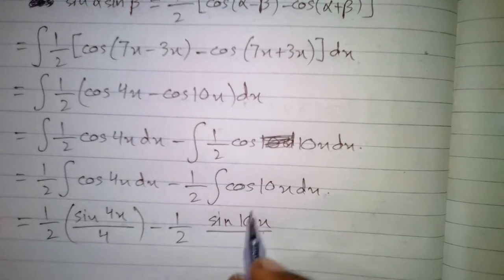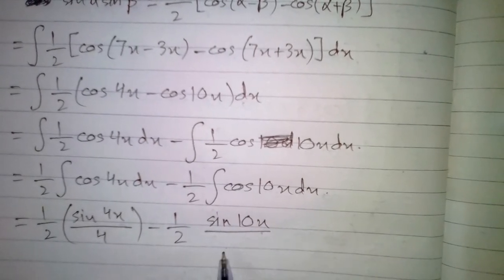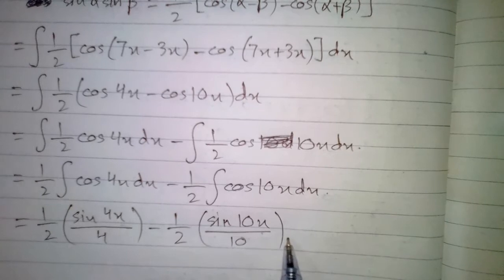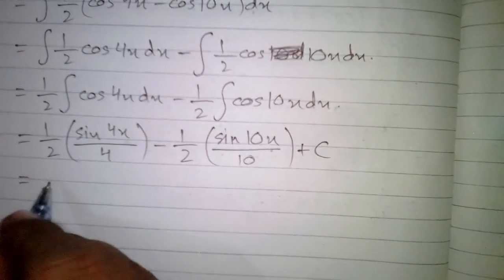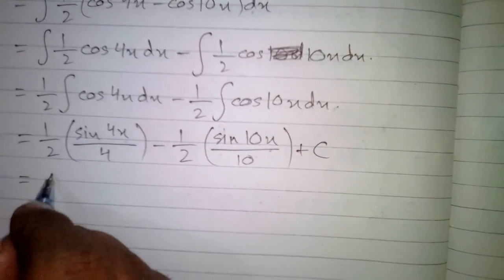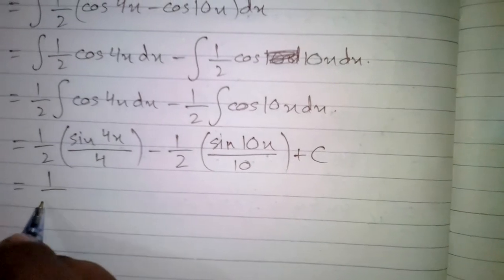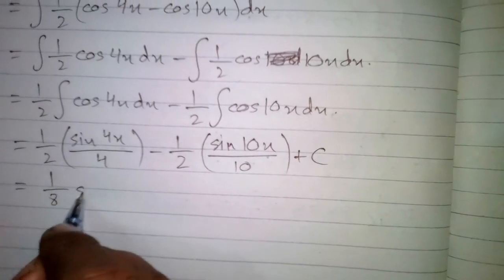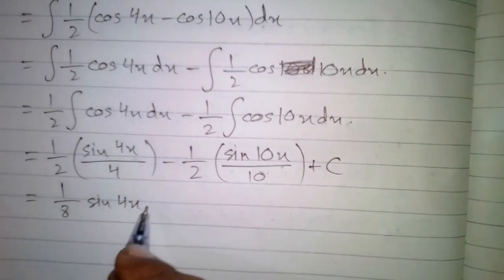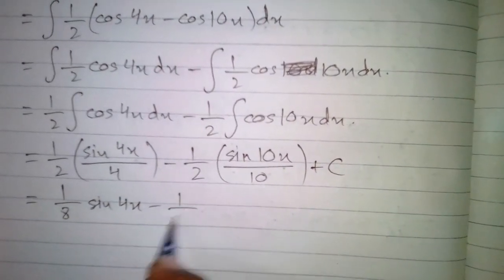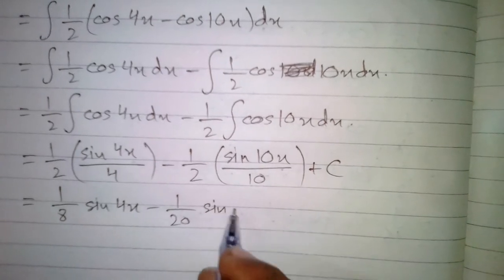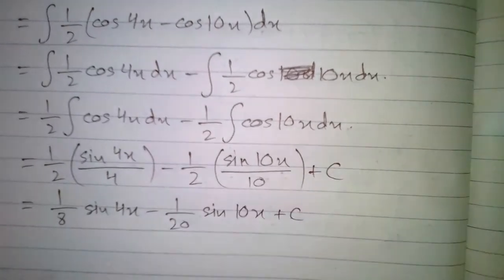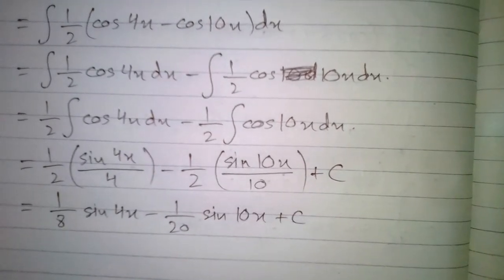Integrating each term, we divide by the derivative of the inner function: sin(4x) divided by 4, and sin(10x) divided by 10, plus C, where C is the constant of integration. After simplifying, we get 1/8 sin(4x) minus 1/20 sin(10x) plus C.